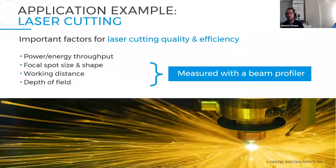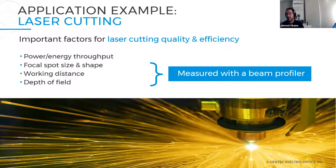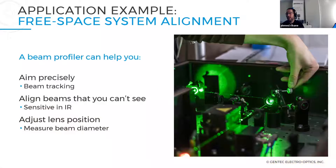Some application examples: first, laser cutting. Beyond power and energy measurement, the focus spot size and shape measurement is important to ensure cutting quality. You can accomplish this by taking a pick-off of your laser beam and placing a camera in front of it to know the profile and exact dimensions. Another application is free-space system alignment, where you need to aim your laser beam precisely — the beam tracking feature we'll see later gives the beam position in real time.